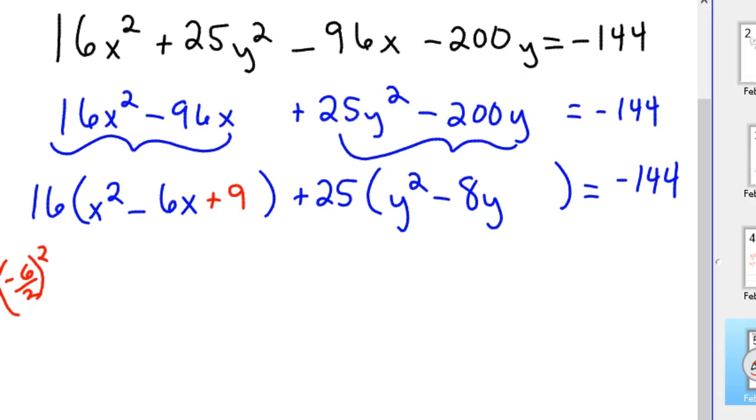But we added a 9 here, and if you know anything about completing the square, you also have to add something to the other side to balance the equation. Well, we have to add 144, not 9. And the reason you add 144 is because we factored out a 16 from that. So you have to multiply that back through, distribute it back through. So 16 times 9 is 144.